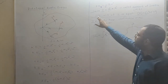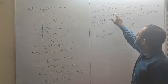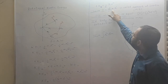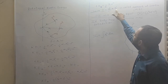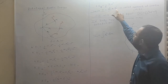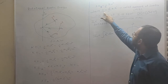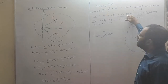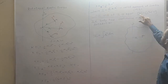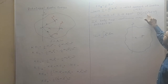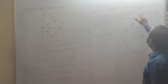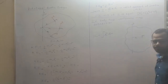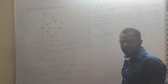So what will be the SI unit of I? This is mass and this is some distance squared, so the SI unit of moment of inertia I will be kg·m². Its dimensions will be M¹L²T⁰.